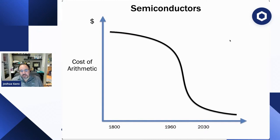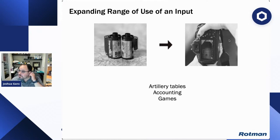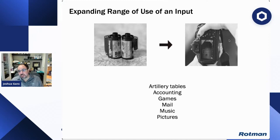We can now do many orders of magnitude more arithmetic than could be achieved without a computer. So you tend to get more of the thing whose cost you've reduced being done. It wasn't surprising that early applications were computing artillery tables or accounting. Then we got more sophisticated uses: computer games, electronic mail, digital music, digital pictures — all versions of arithmetic, but not seen as traditional arithmetic problems until we had very cheap arithmetic to handle them.